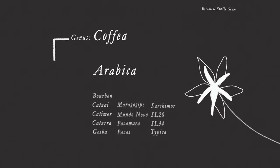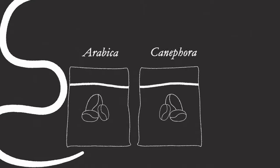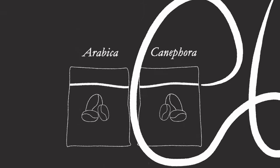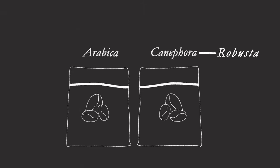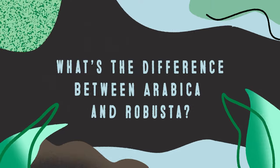Coffea is the genus, Arabica is a species, and there are dozens of varieties of Arabica coffees within that species. The species that are typically grown commercially are Arabica and Canephora. Robusta is one variety of the Canephora species, though often the word Robusta is used as another name for the Canephora species itself. What's the difference between Arabica and Robusta?